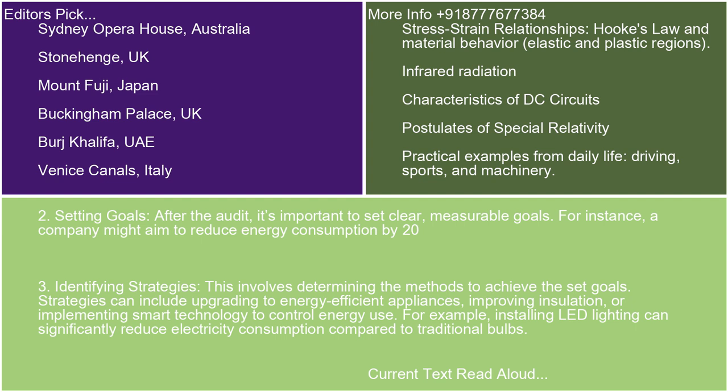Key Concept 3: Identifying Strategies. This involves determining the methods to achieve the set goals. Strategies can include upgrading to energy-efficient appliances, improving insulation, or implementing smart technology to control energy use. For example, installing LED lighting can significantly reduce electricity consumption compared to traditional bulbs.